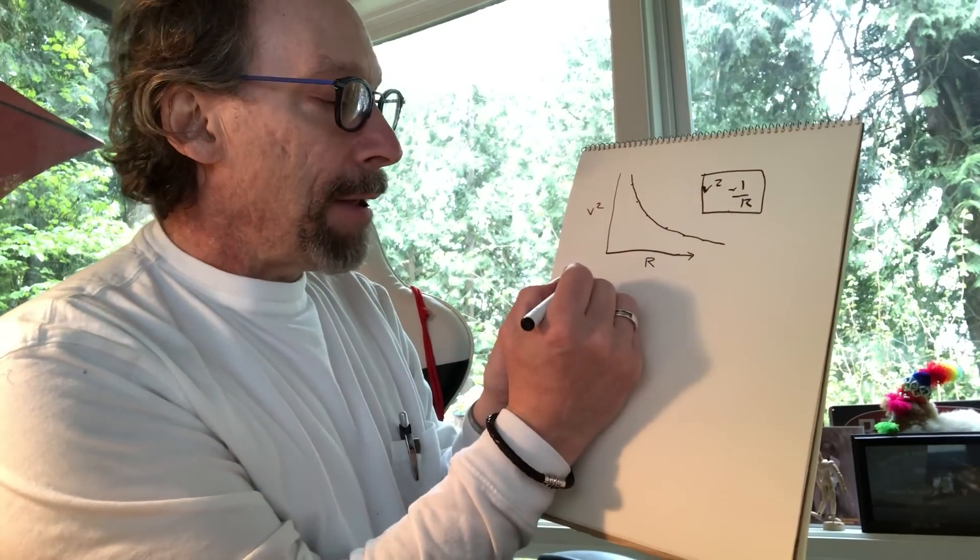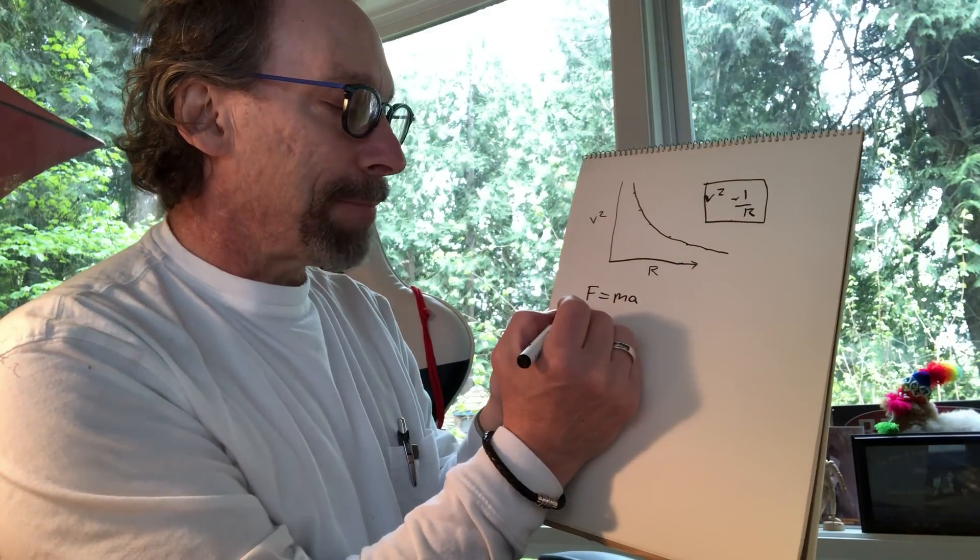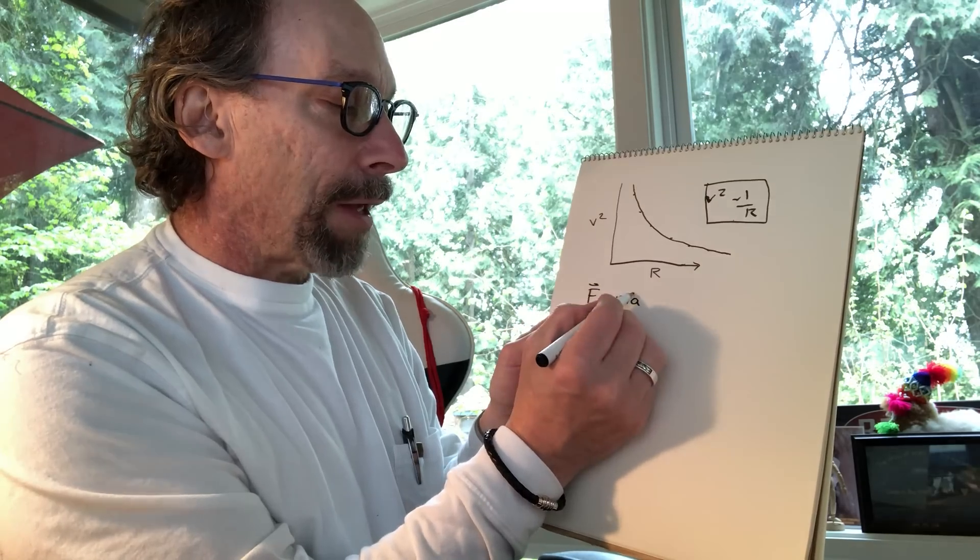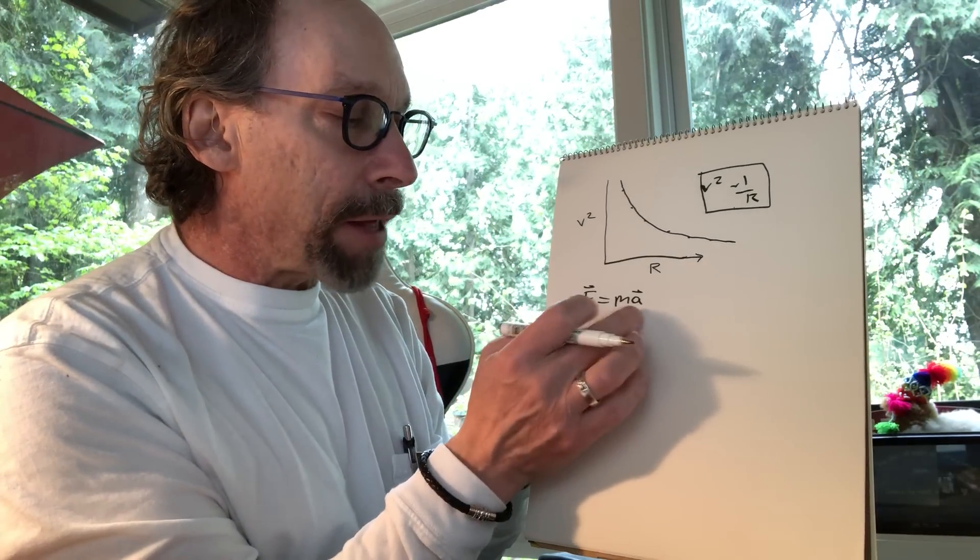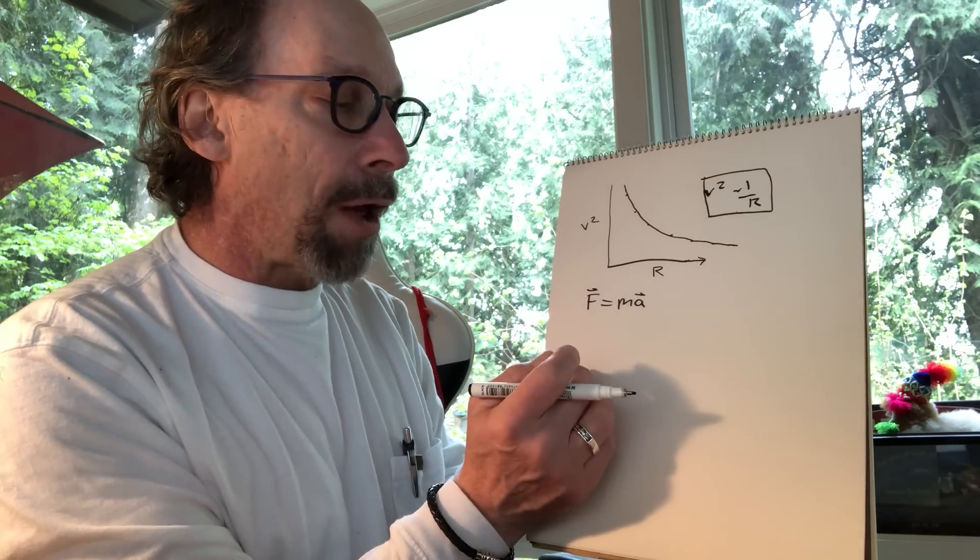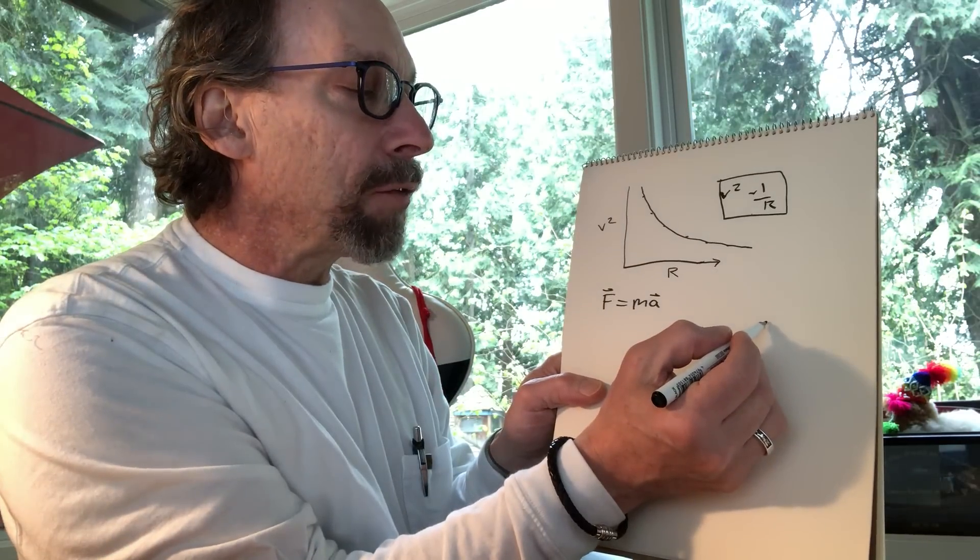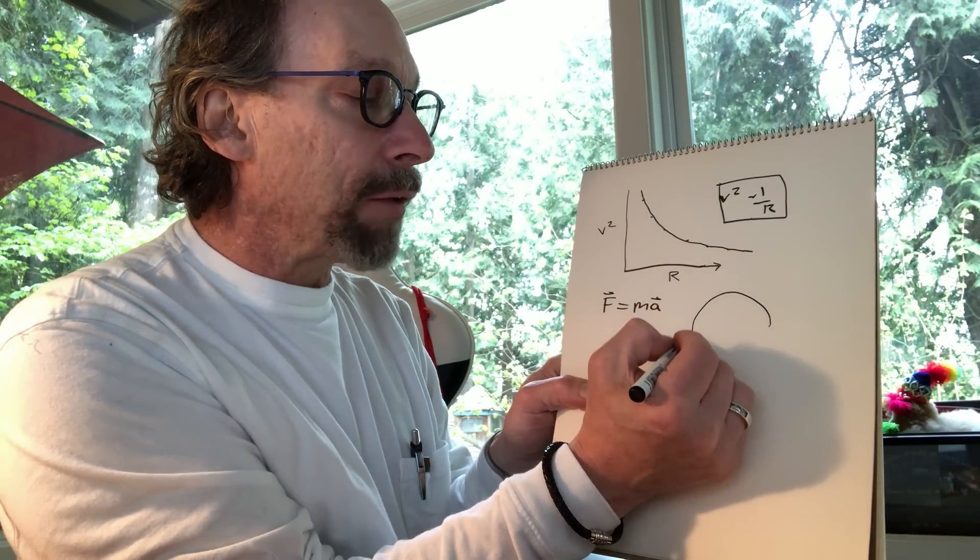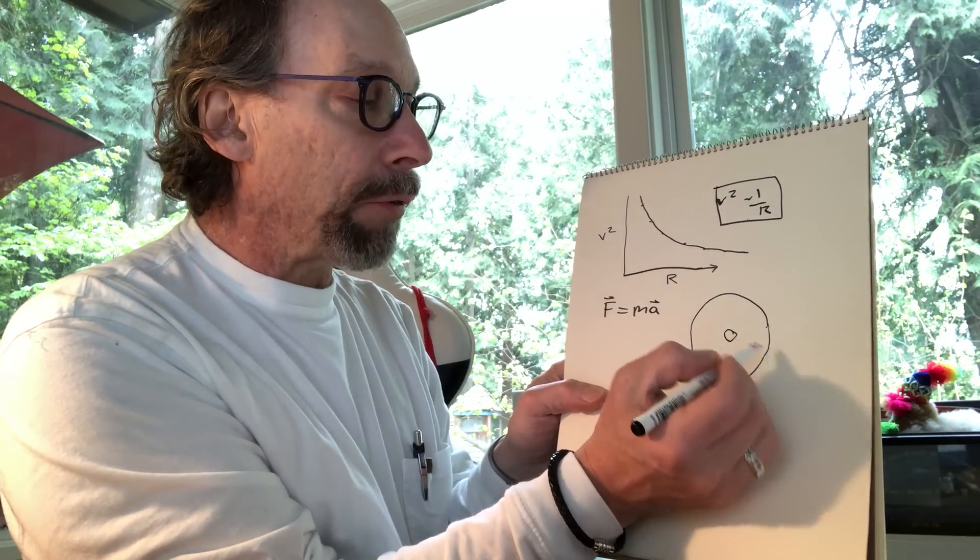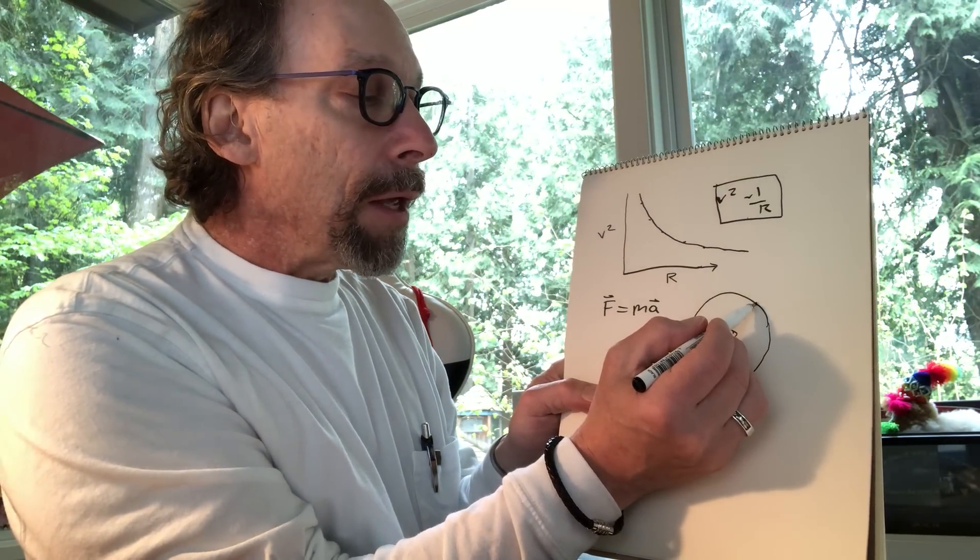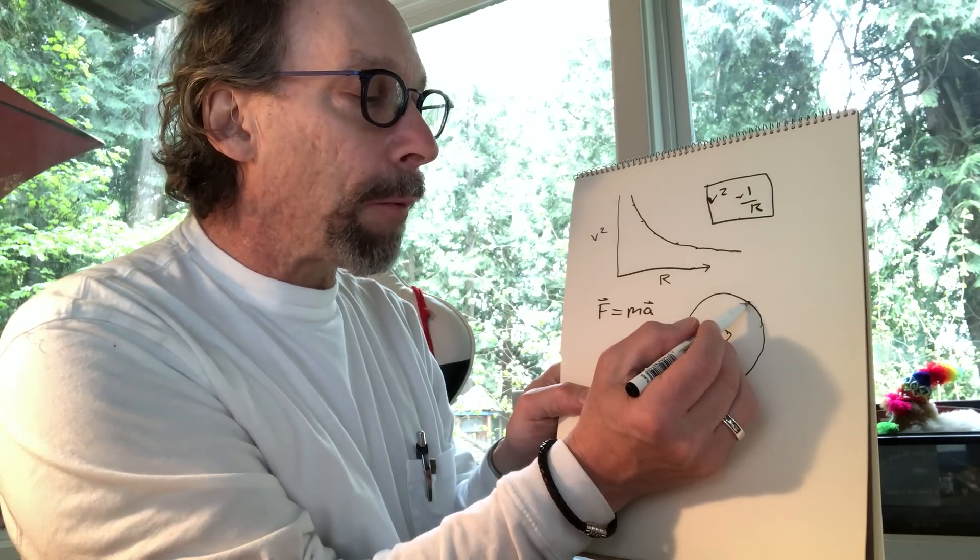Newton had developed his first law of motion, F equals ma. These are vector quantities - the force is mass times acceleration. A force produces a change in velocity, which is acceleration. Let's approximate the planets as going in circles around the sun, or the moon going in a circle around the earth. If they're orbiting a circle, they're going at a constant speed.